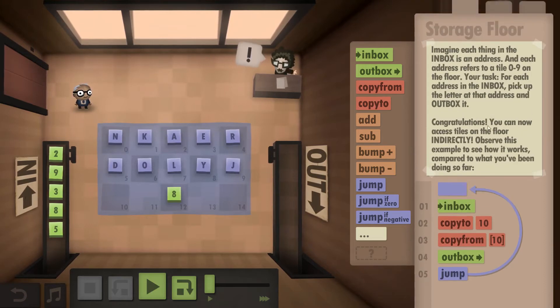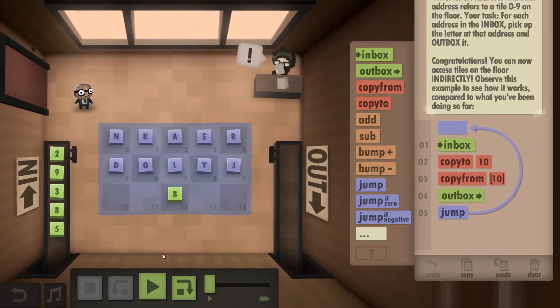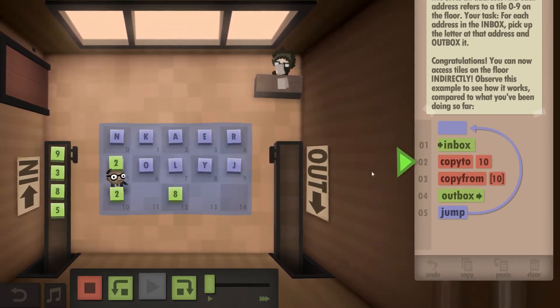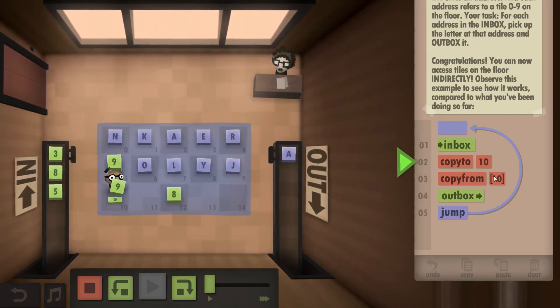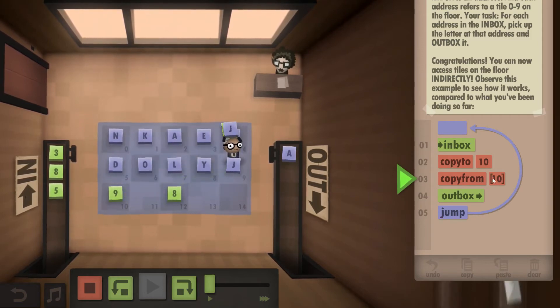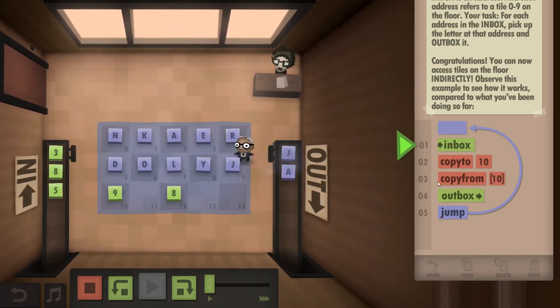This is a pretty straightforward one; as you can see, the code is pretty short. Essentially what you do is you copy your number from the inbox, then you copy from the number that you just stored and outbox it.